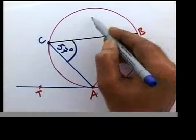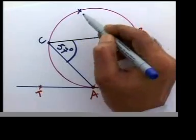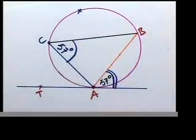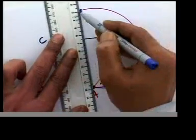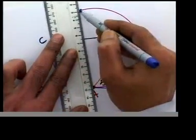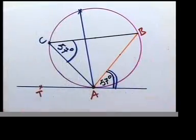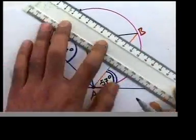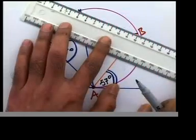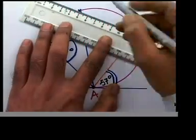Let's take one more point on the arc and measure the angle again to further verify. We'll join that point to B as well, making one more angle using chord AB in the alternate segment.